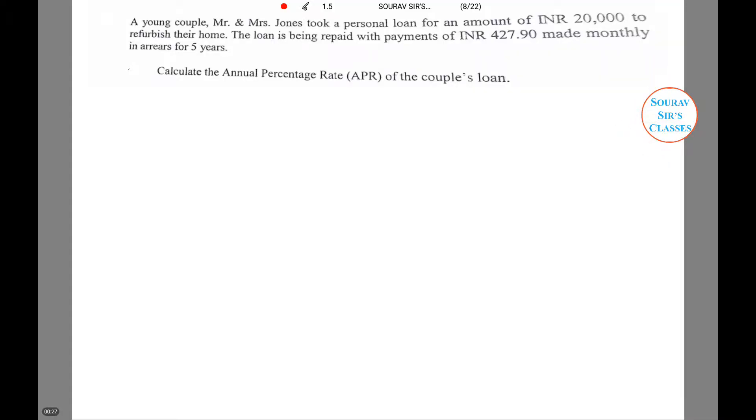Now let us read the question which we will be solving in today's tutorial. The question is that a young couple named Mr. and Mrs. Joan took a personal loan of amount $20,000 to refurbish their home. The loan is being repaid with payments semi-monthly in arrears over 4.5 years. We need to calculate the annual percentage rate of the couple's loan.